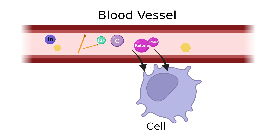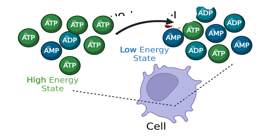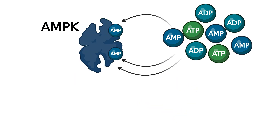What does that mean? It means there's a shift in the cellular environment, reducing the molecules that are high in energy, like adenosine triphosphate — ATP — and increasing the molecules that are lower in energy, like adenosine diphosphate and adenosine monophosphate — ADP and AMP. This shift in the ratio of ATP to ADP/AMP is sensed by a master protein within the cells called AMPK.